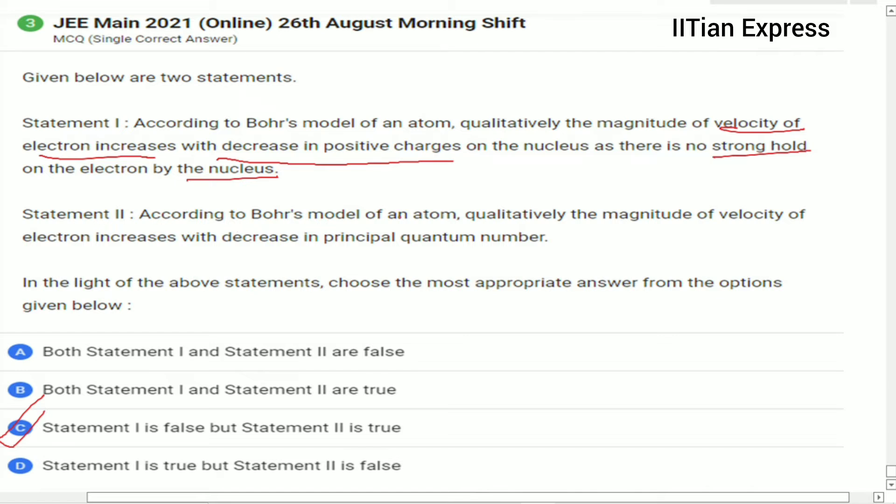Now consider Statement 2. According to Bohr's model of an atom, qualitatively the magnitude of velocity of electron increases with decrease in principal quantum number.